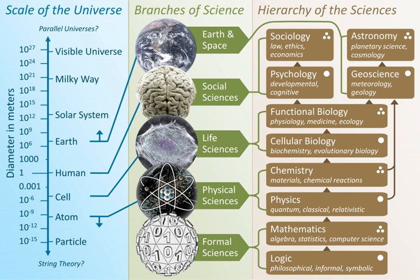Mathematics, first of all known as the science of numbers which is classified in arithmetic and algebra, is classified as a formal science, and has both similarities and differences with the empirical sciences. It is similar to empirical sciences in that it involves an objective, careful and systematic study of an area of knowledge; it is different because of its method of verifying its knowledge, using a priori rather than empirical methods.